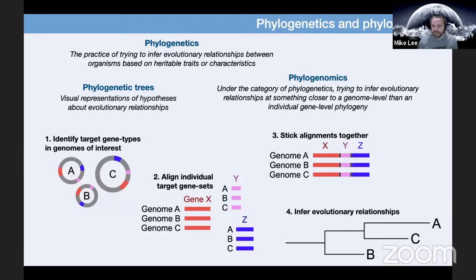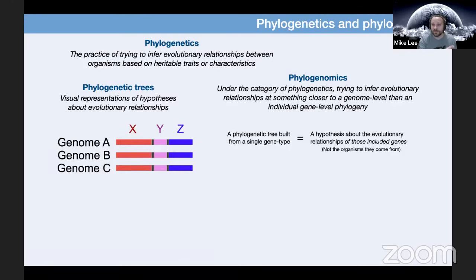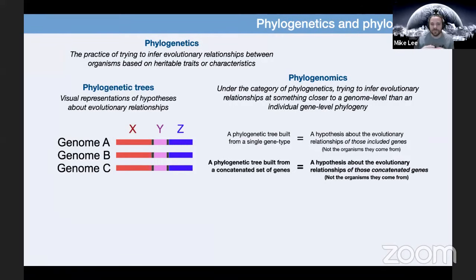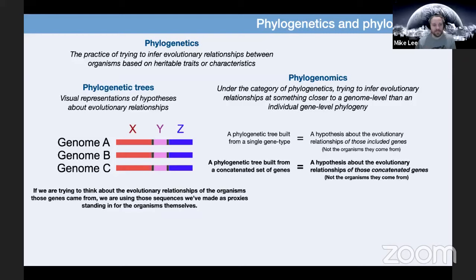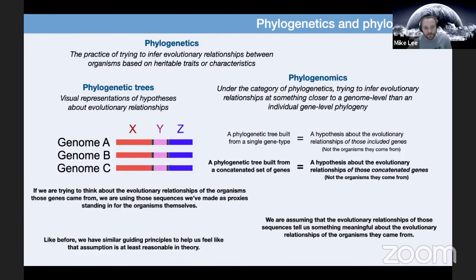Just like with a single gene tree, where we're making a hypothesis about the relationships of those genes and not directly the organisms they come from, we're doing the same thing with a multiple gene tree. We're attempting to infer the evolutionary relationships of these concatenated sequences we just made. If we're trying to think about the evolutionary relationships of the organisms these came from — which we usually are — we're using these sequences as proxies, assuming their relationships tell us something meaningful about how the organisms relate.